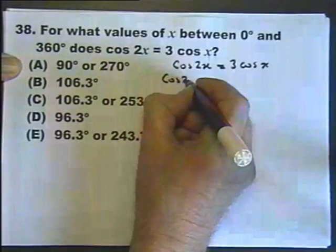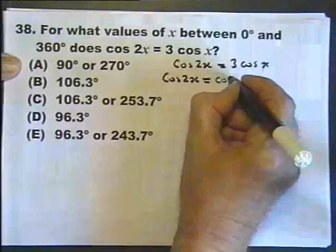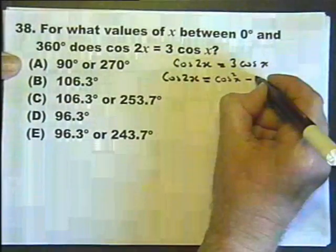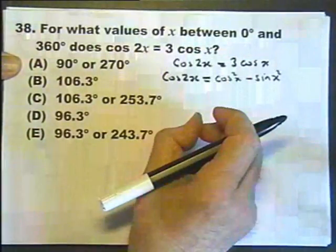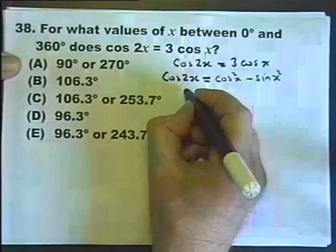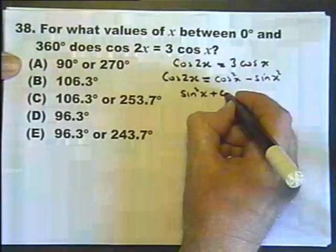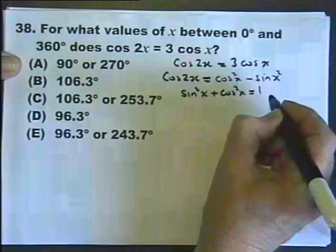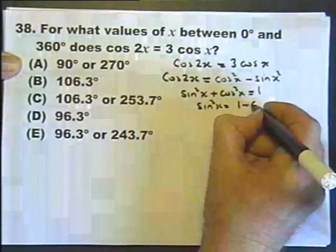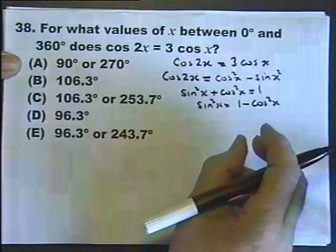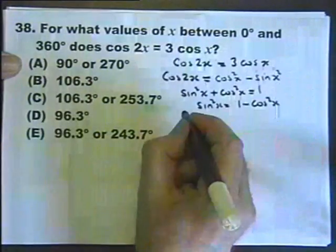So I'll write down something you're meant to know: cosine 2x equals cosine²x minus sine²x. But substituting that in will give both cosines and sines. Using the most popular identity — sine²x plus cosine²x equals 1 — and rewriting to make sine²x the subject by subtracting cosine²x from both sides, I can now substitute that information in and make the equation entirely in cosines.